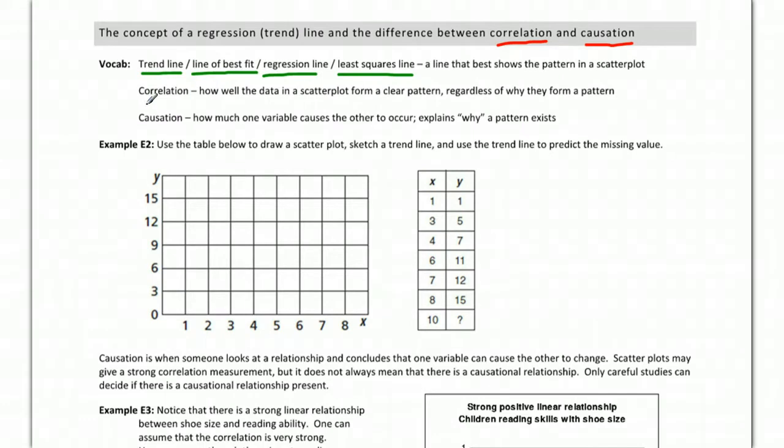Next one is correlation. Correlation is how well the data form a good pattern. For example, if you have something that looks like this where there's a very obvious line being formed, how well it forms a linear pattern, that's the correlation, or that would be high correlation. If you have something like this where there's clearly not much of a pattern going on, that would be low correlation because there's not a clear pattern.